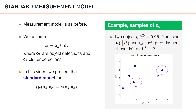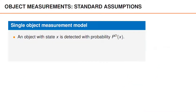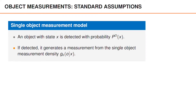The purpose of this video is to present the standard model for the set of object detections OK. We use boldface GK of OK given XK to denote the distribution of OK given XK. Note that boldface GK is still just a multi-object PDF, made boldface to distinguish it from the non-boldface GK that describes the distribution of an object measurement vector given that the object has been detected. For a single object, an object with state X is detected with probability PD of X, and if detected, it generates a measurement from the single object measurement density GK.